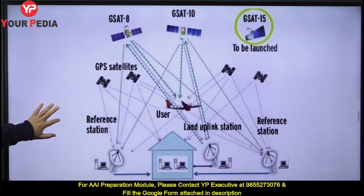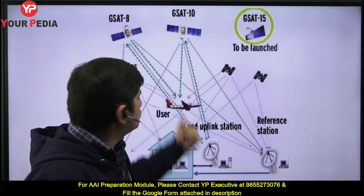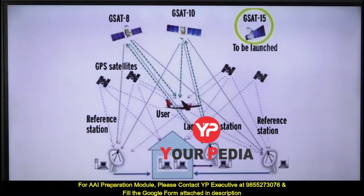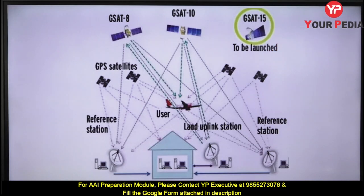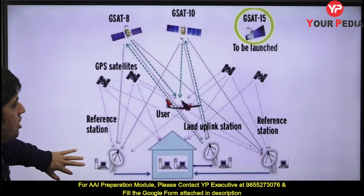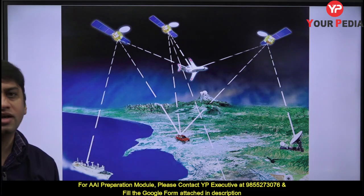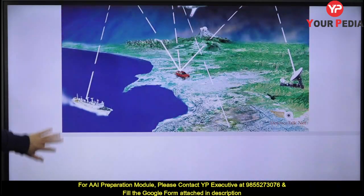The master control center of ISRO handles this entire activity. Signals come from various satellites and go to aircraft. When you are a couple of kilometers above the Earth's surface — say 8 to 10 kilometers — regular signals don't reach, so only satellite signals work. Satellites like GSAT-8, GSAT-10, and GSAT-15 provide signals to aircraft — this is the GAGAN project of ISRO.